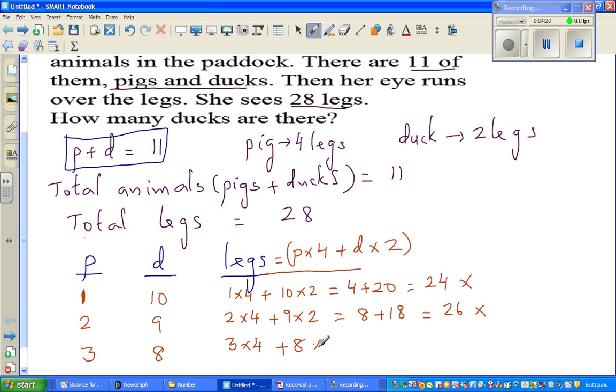8 times 2 is 12, plus 2 times 8, times 2 is 16, which is 28 legs. So this is the information that matches.